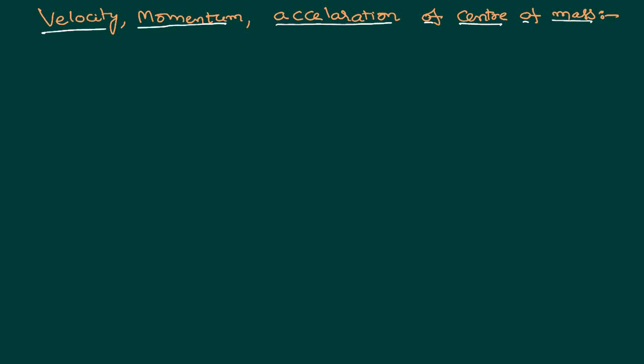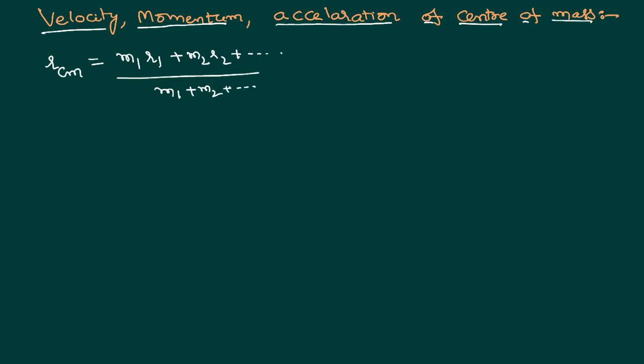We know that the center of mass is a point of a body or a system which represents the actual motion of that body or system. We also know that the center of mass of that system can be represented as M1R1 plus M2R2 and so on, divided by M1 plus M2 and so on. When we say R_CM, it can be applied whether the body is one-dimensional, two-dimensional, or three-dimensional.